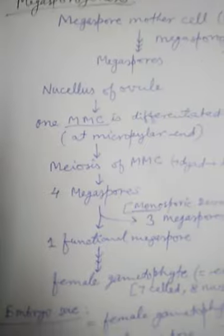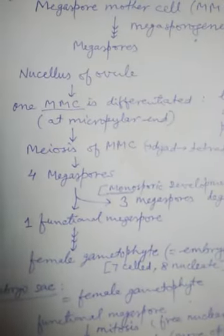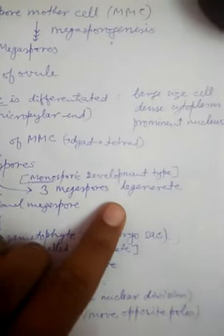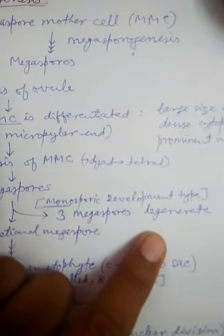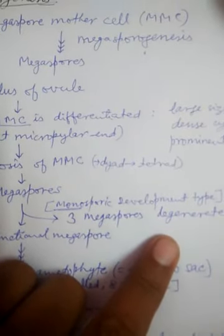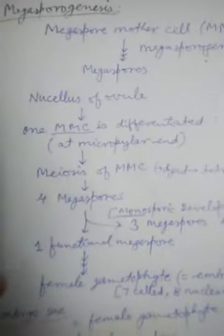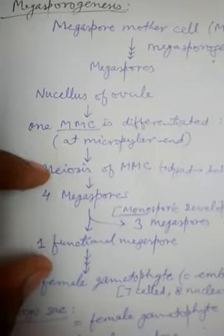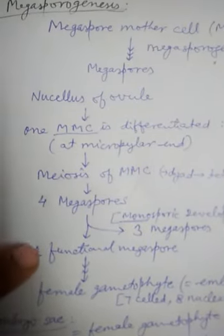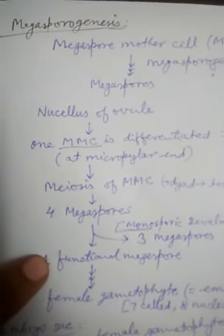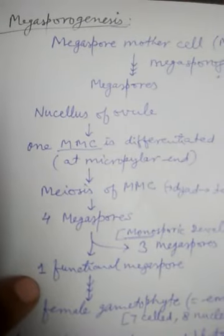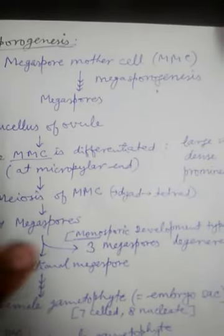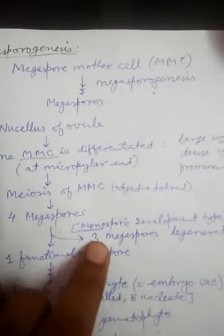In flowering plants, only one megaspore cell becomes functional; the rest three megaspores degenerate or die. This kind of development of the female gametophyte — where only one functional megaspore gives rise to the female gametophyte and the rest degenerate — is called monosporic development.